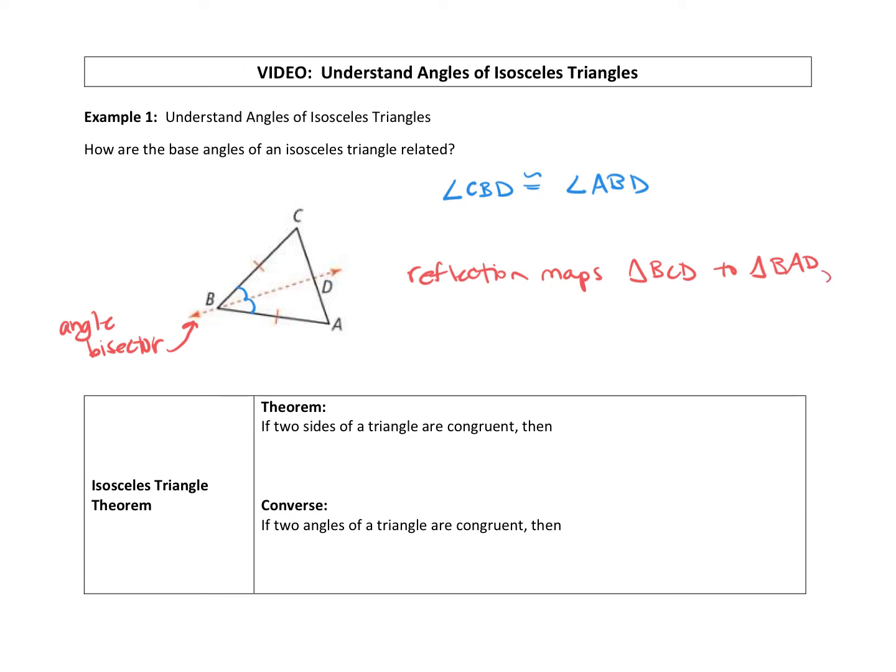That means that the measure of angle BCA is equal to the measure of angle BAC. And because the measure of those angles are equal, we can conclude that the angles are congruent. So angle BCA is congruent to angle BAC.